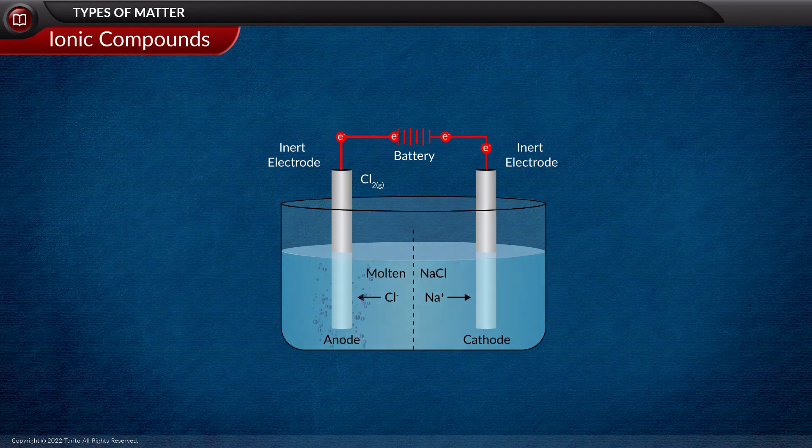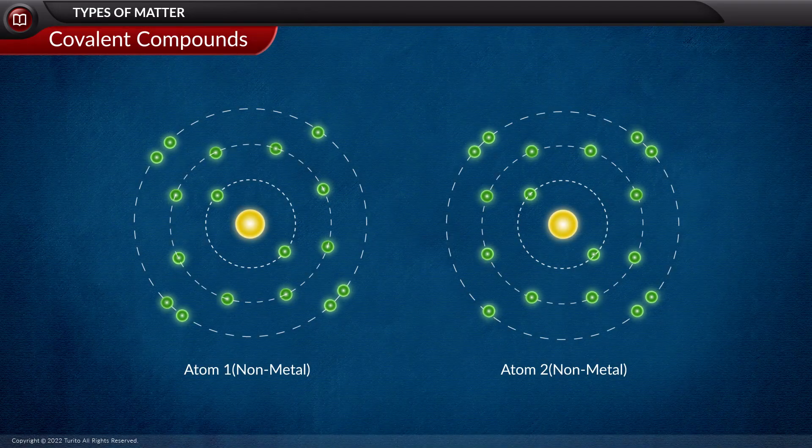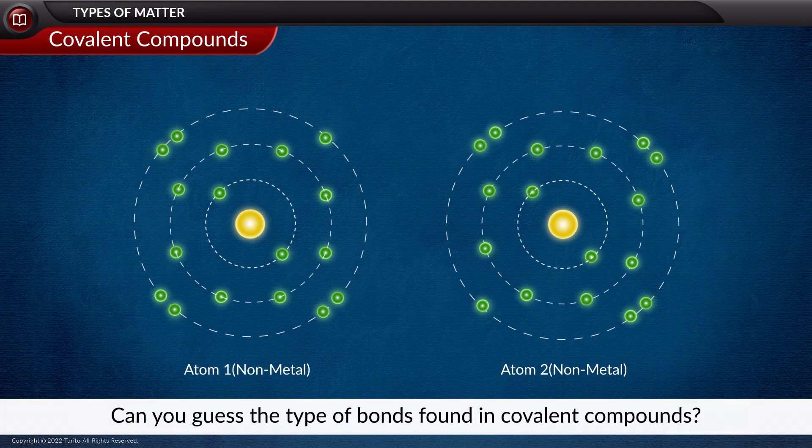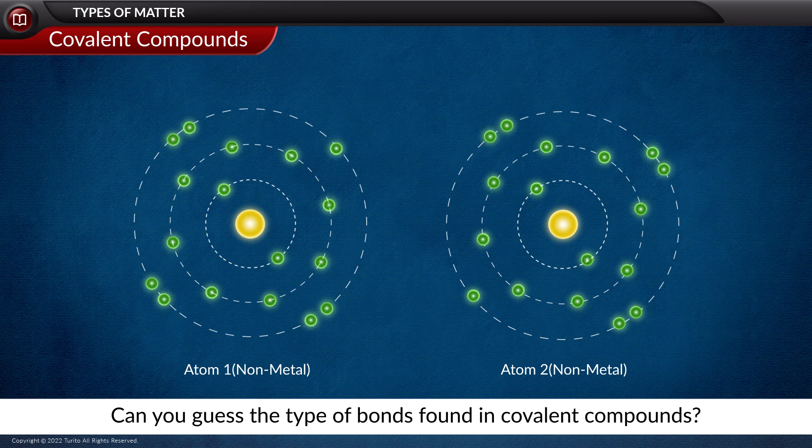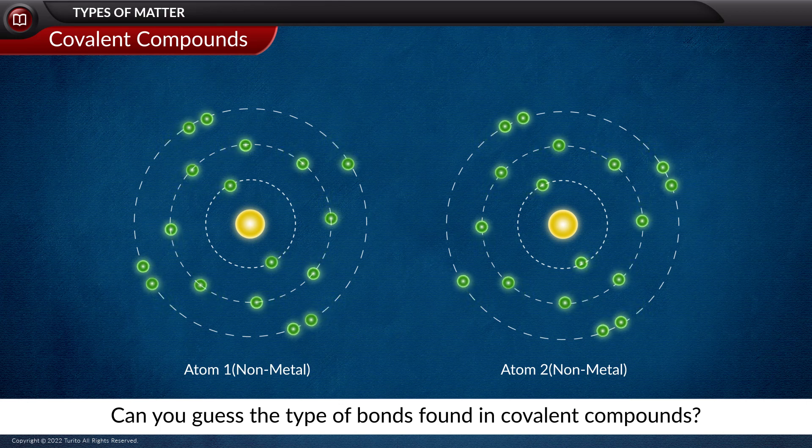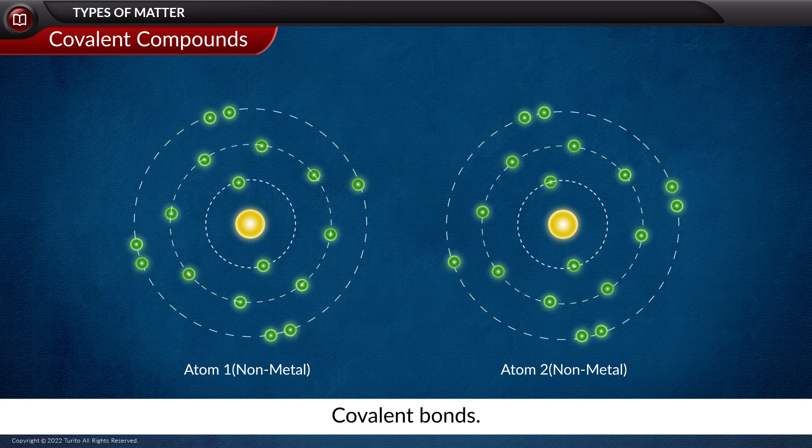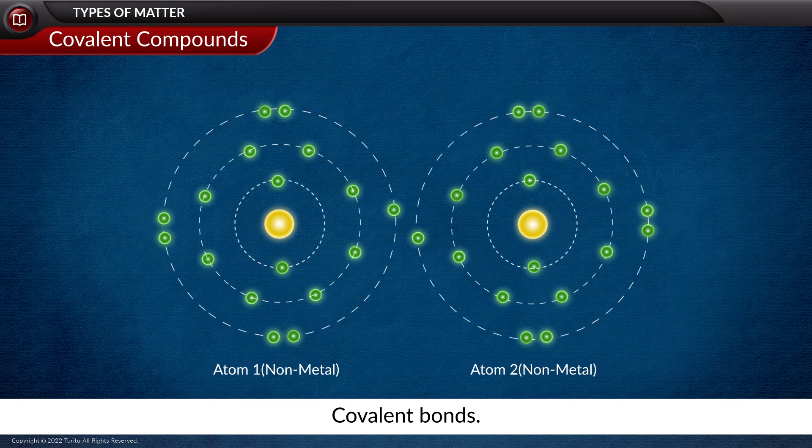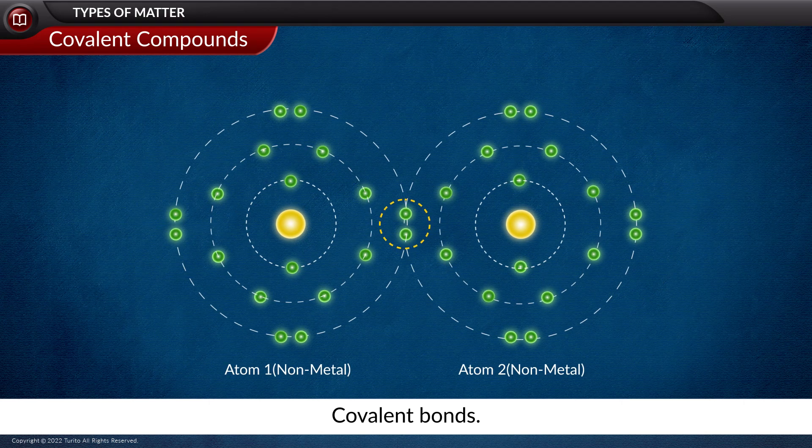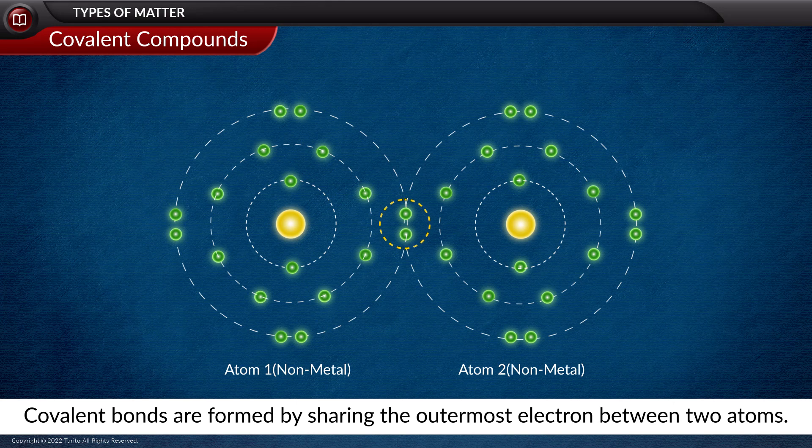The next type of compound is a covalent compound. Now can you guess the type of bonds found in covalent compounds? Covalent bonds are present in them. Covalent bonds are formed by sharing the outermost electron between two atoms.